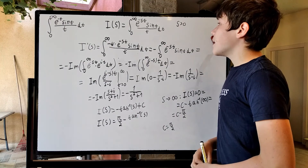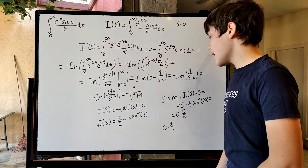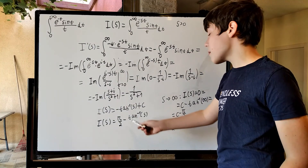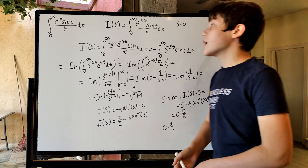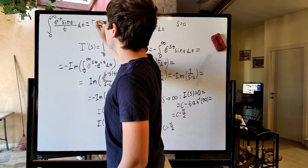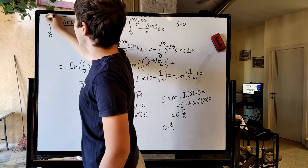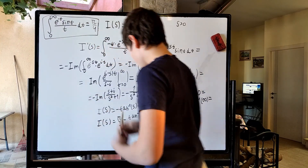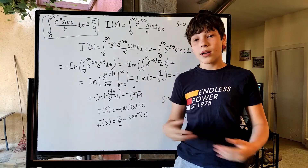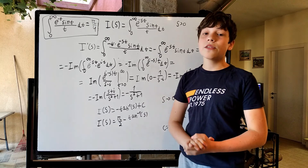Now we can just plug in s equals 1 to get our original integral. The inverse tangent of 1 is pi over 4, so pi over 2 minus pi over 4 is pi over 4. Finally, we can say that this integral equals pi over 4. If you want more content like this, please subscribe to my channel — I'll be uploading more interesting problems like this in the future.